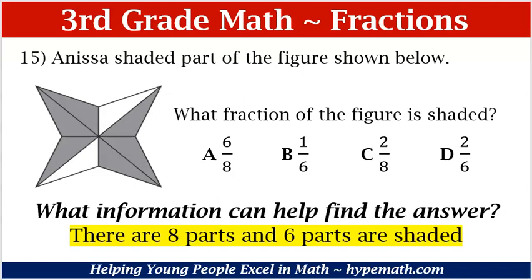What information can help us find the answer? First, we need to count the number of parts in the figure. When we count it, we see that there are one, two, three, four, five, six, seven, eight — eight total parts of the figure. Now we need to count the number of parts that are shaded: one, two, three, four, five, six — there are six parts that are shaded.